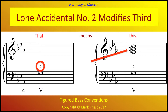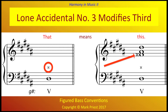Another example: the natural sign with the bass G note refers to the 3rd above that bass. The natural sign means that the B-flat, according to the key signature, must be raised a chromatic semitone to B-natural to create the V triad of C minor. Finally, the double-sharp sign with D-sharp in the bass means the 3rd — F-sharp, according to the key signature — is raised to F-double-sharp. Just remember this: in figured bass notation, an accidental with no Arabic figure indicates a chromatically altered third above the bass note.